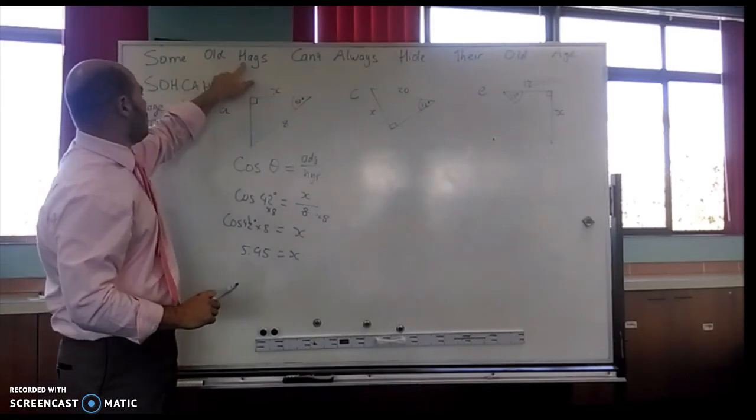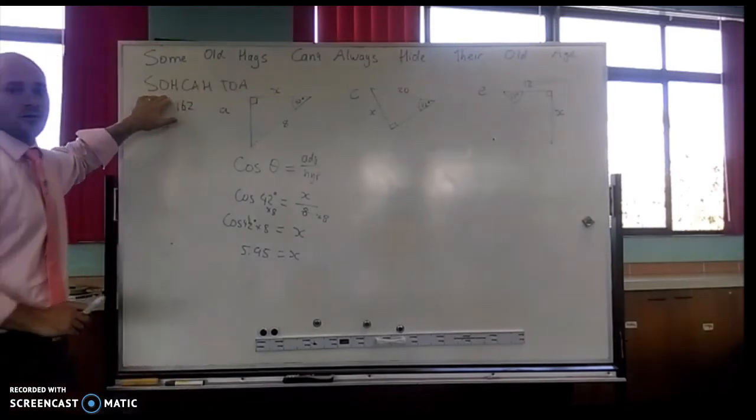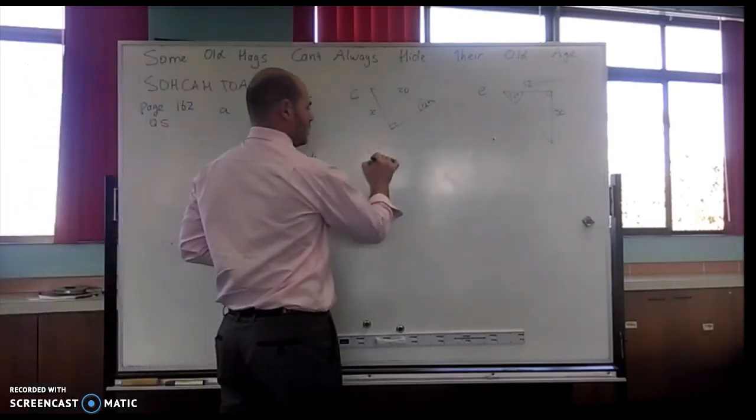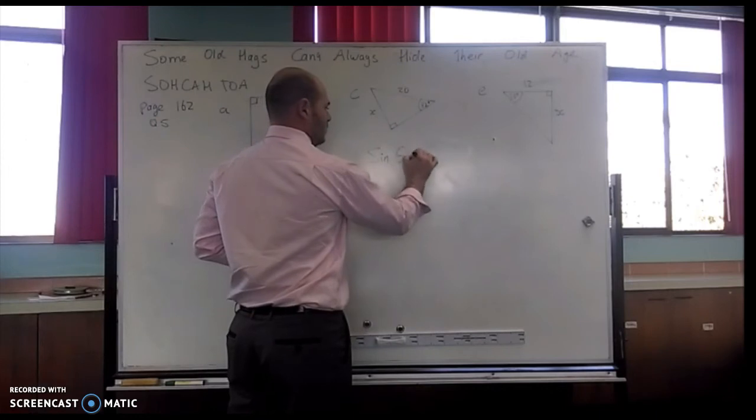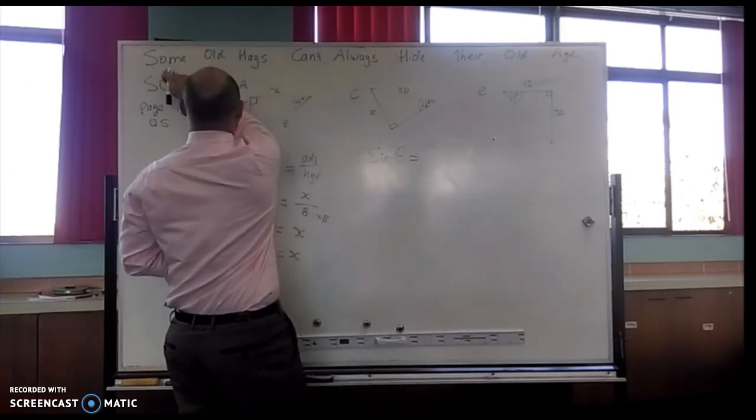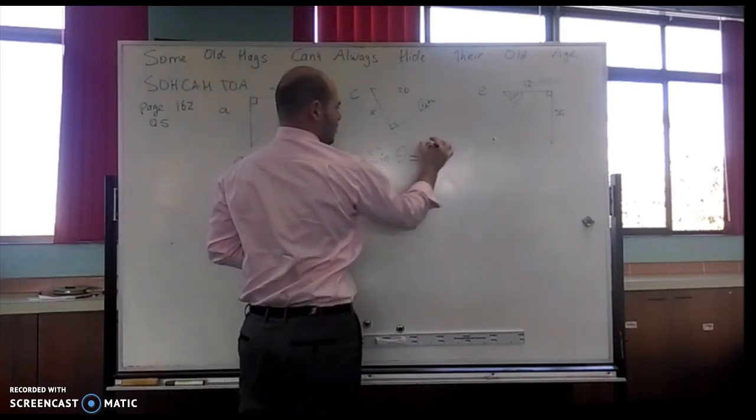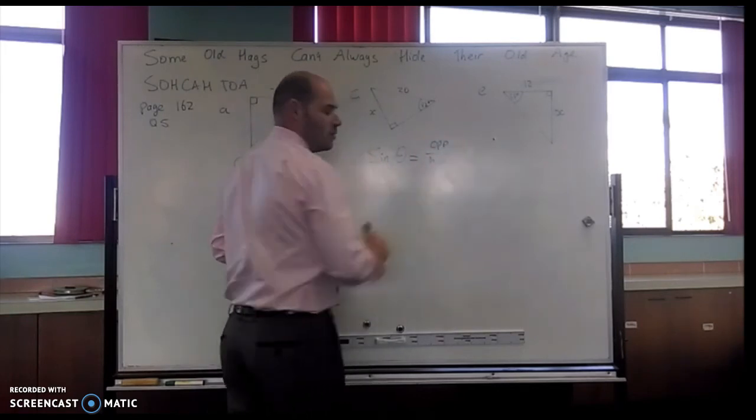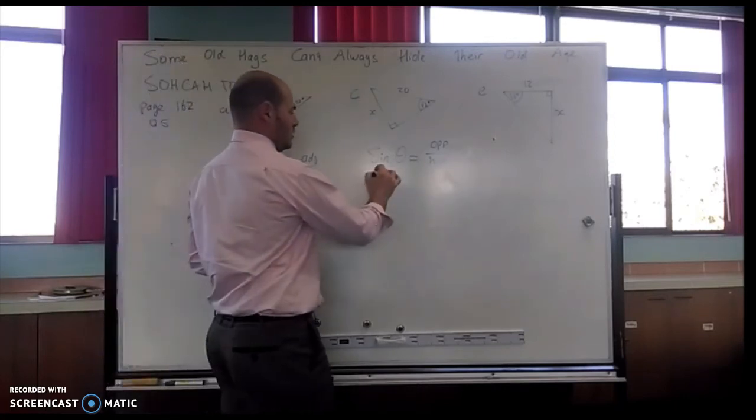So I need to find my O. So here it is: O and H. If I'm using SOHCAHTOA, O and H, so this time I'm going to use sine. Sine of the angle equals opposite over hypotenuse.